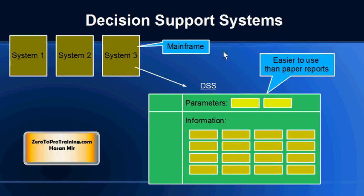Decision Support Systems were definitely easier to use than paper reports, because paper reports were batch processing — you would run a report, it would go into a queue, and then you would wait for the report to complete. In most cases, reports were run only on a scheduled basis.